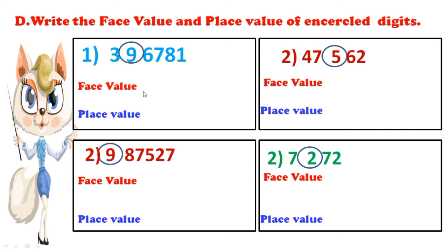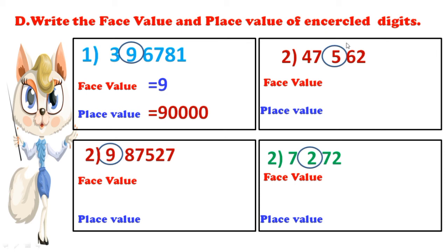What is the face value here? 9 is 9 only. Place value means where the number is situated. We can find out: 1s, 10s, 100s, 1000s, 10,000th place. The number 9 in this number is in the 10,000th place, so the place value of 9 is 90,000. See here: 5 is there — the face value of 5 is 5 only, but the place value of 5 in this problem — 1s, 10s, 100s — so the place value of 5 means 500.